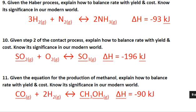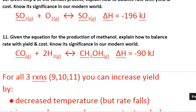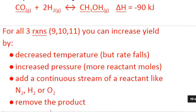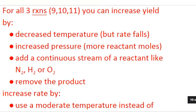So what we can do for one reaction to increase rate and yield, we can do for all of them. So for all three reactions, you can optimize yield or increase yield by using a decreased temperature, but your rate is going to fall. So usually they use a moderate temperature to kind of meet it in the middle, and you might see something around 200, 400 degrees.